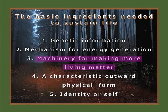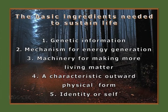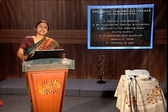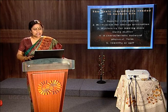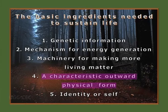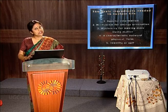The third important ingredient is machinery for making more living matter. Here comes the role of ribosomes, which are involved in the translation process and make important enzymes that carry on the synthesis of enzymes to execute various pathways within a living system. The fourth important character is that organisms should have a definite physical form — a definite different look — within which the genetic material resides quite safely.